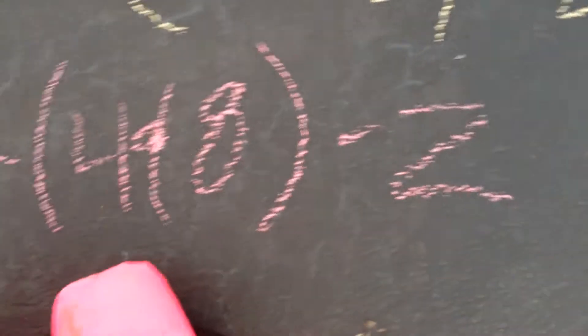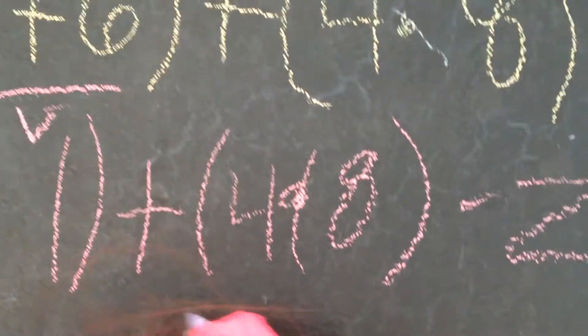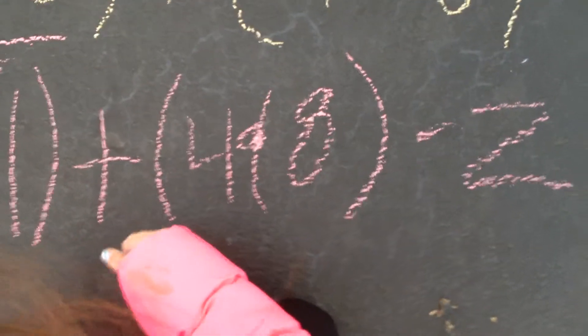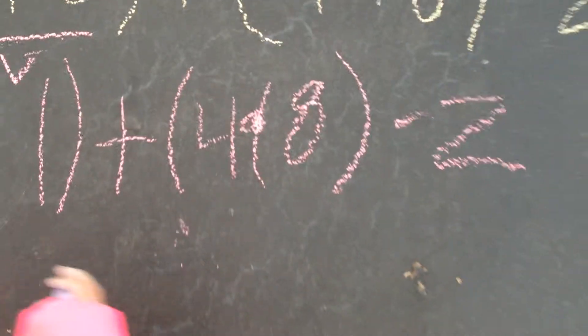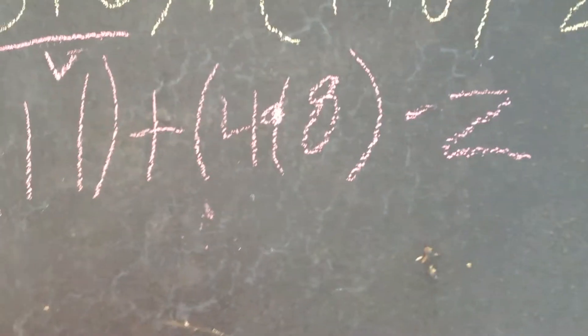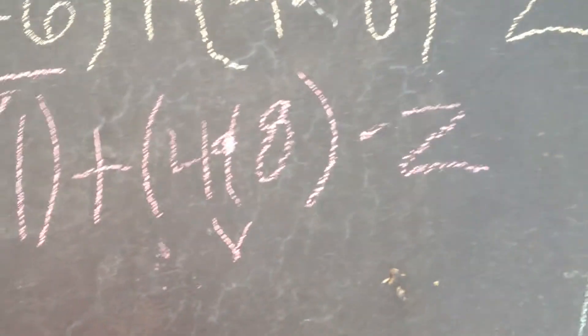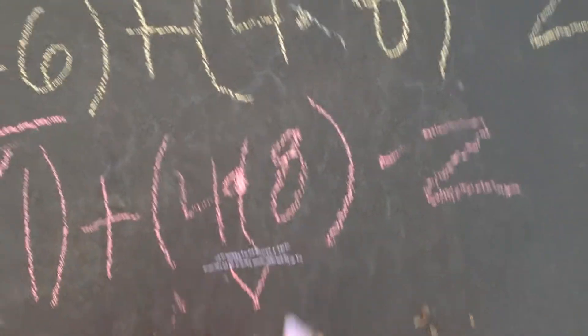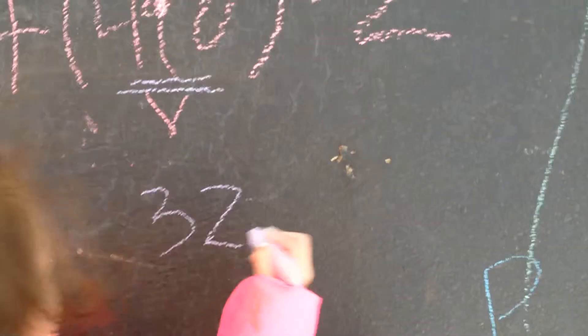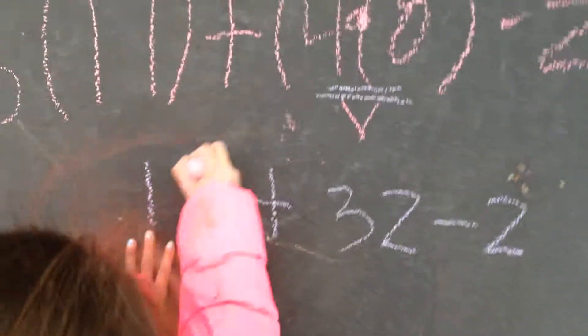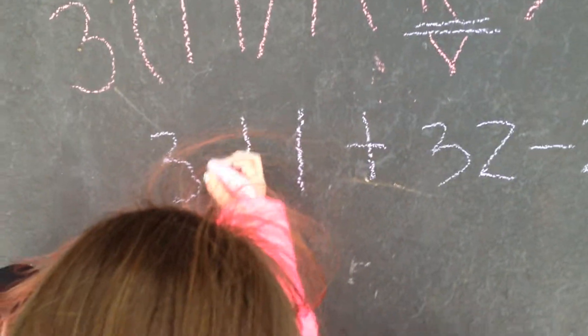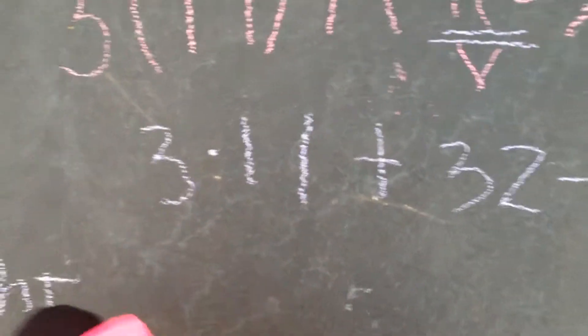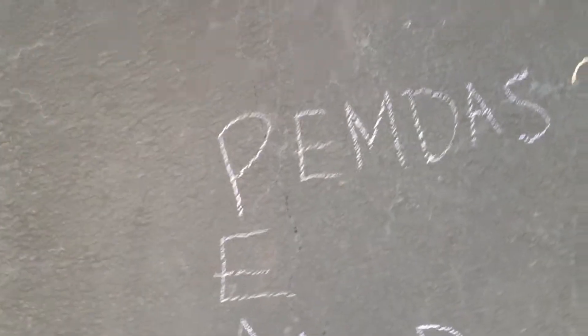We're using a dot for the multiplication. Because when you do variables, it could get confusing if you use the x symbol. We're going to look and see if there are any more parentheses — and obviously there are. We have 4 times 8, so we're going to do that. Since 4 times 8 is 32, we're going to do two lines under it since it is our second step. Then we rewrite the rest of the problem with a dot to remind us it's multiplication. We look and see if we have any more parentheses, which we don't — so we can cross P off of the list since we're done with parentheses.